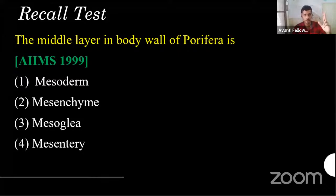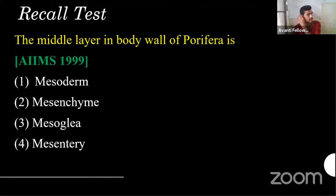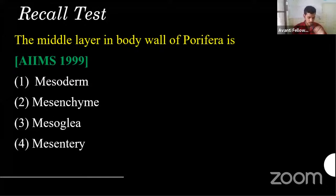If I imagine Porifera, that means sponges. Think about how the coelom may be and how the body walls may be. If coelom is present or absent, you can simply tell — higher organisms will have coelom, lower organisms do not. If you know whether coelom is present, you can find other answers. I'm ending the poll.